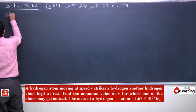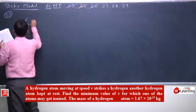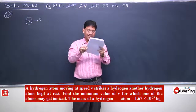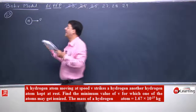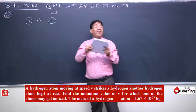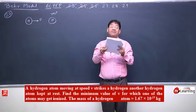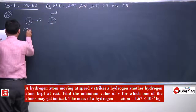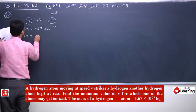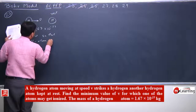Problem number 27. A hydrogen atom moving with speed V strikes another hydrogen atom kept at rest. Find the minimum value of V for which one of the hydrogen atoms may get ionized. The mass of the hydrogen atom is given as 1.67 × 10⁻²⁷ kg. We need to find minimum V so that a hydrogen atom is ionized.